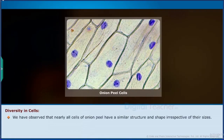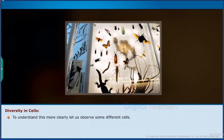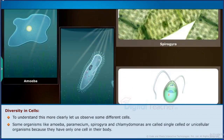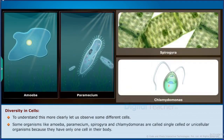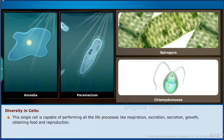Nearly all cells of the onion peel have a similar structure and shape regardless of size. However, there are millions of living organisms in nature, and each organism's cells can have different shapes, sizes, and numbers. Organisms like amoeba, paramecium, spirogyra, and chlamydomonas are called single-celled or unicellular organisms because they have only one cell. This single cell is capable of performing all life processes including respiration, excretion, secretion, growth, obtaining food, and reproduction.